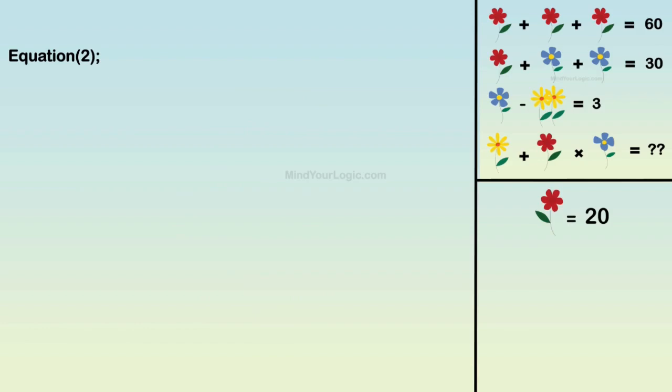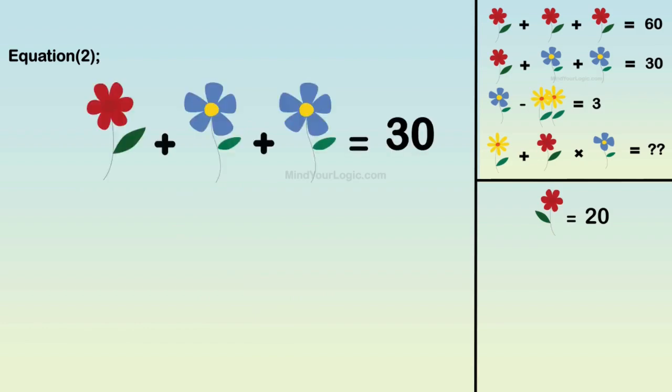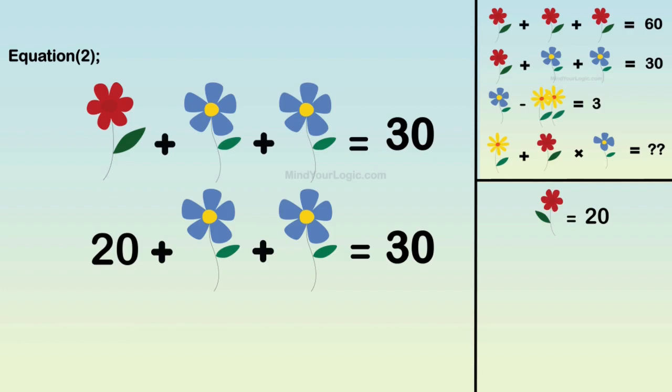Moving forward to equation 2. Red flower plus blue flower plus blue flower equals 30. Substitute the value of the red flower. We get the value of the blue flower as 5.